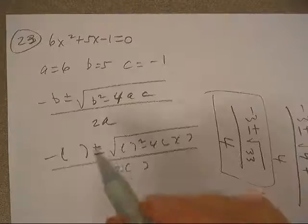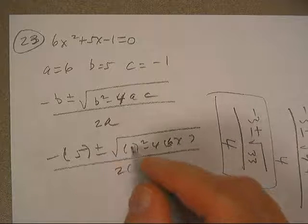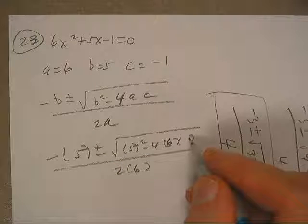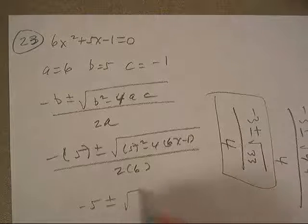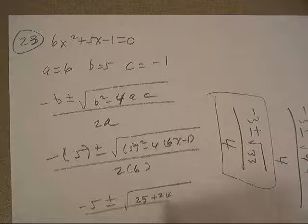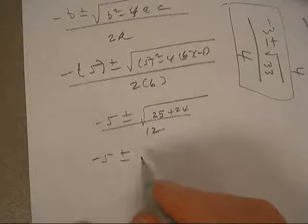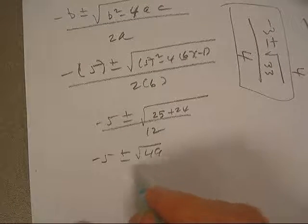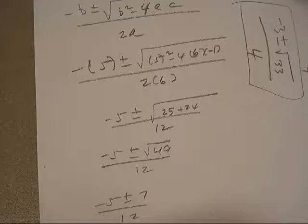But when there is a perfect square under there, a is 6, it does factor. And here I get negative 1, so I get negative 5 plus or minus, that one is 25, that one is 24, that's 12, negative 5 plus or minus root 49, negative 5 plus or minus 7 over 12.